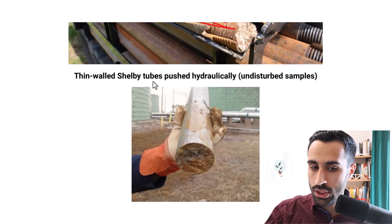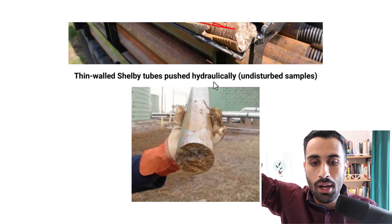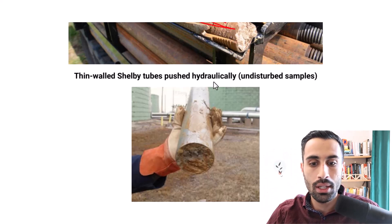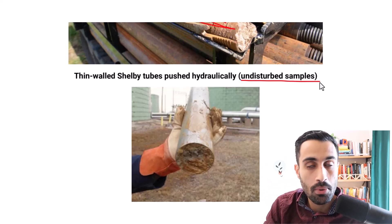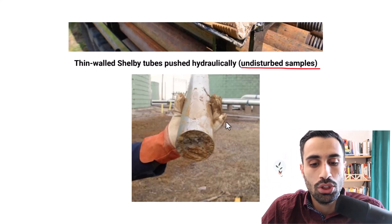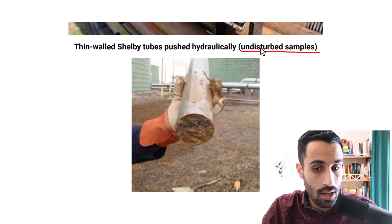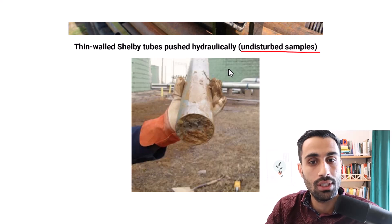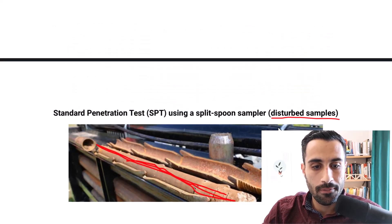Now when we look at the thin walled Shelby tube, this is pushed hydraulically. So it's not pushed with a drop hammer, with a force, it is hydraulically pushed through the soil. And these give us undisturbed samples for the mechanical property: strength, shear strength, triaxial test, unconfined compression strength, and consolidation. That's how that would look for the undisturbed, giving us a closer approximation of the on field in situ condition of that soil.